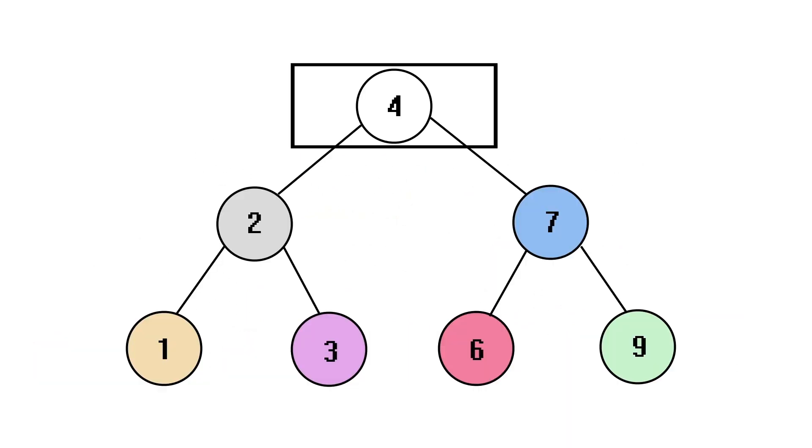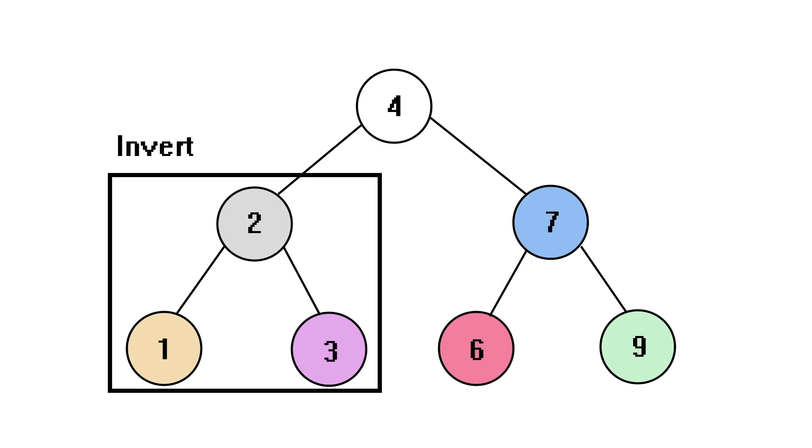For example, suppose we want to invert this binary tree rooted at 4. We first want to invert the left subtree rooted at 2, and invert the right subtree rooted at 7, then swap their positions. So now we have two sub-problems with two smaller inputs.